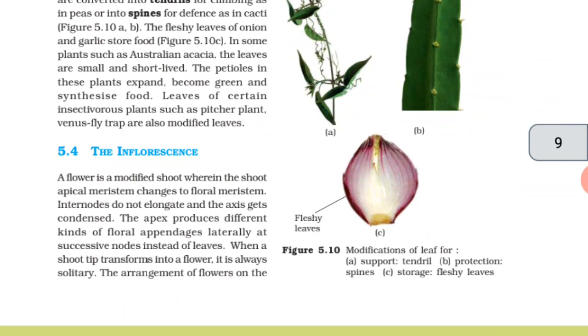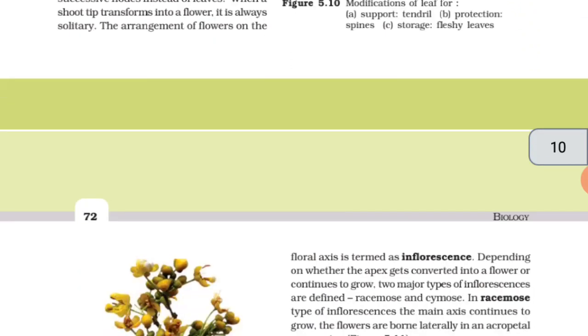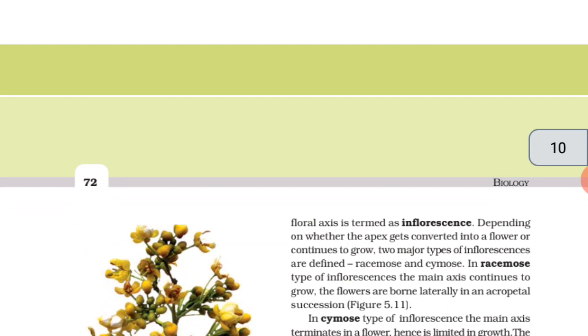The inflorescence. A flower is a modified shoot wherein the shoot apical meristem changes to floral meristem. Internodes do not elongate and the axis gets condensed. The apex produces different kinds of floral appendages laterally at successive nodes instead of leaves. When a shoot tip transforms into a flower, it is always solitary. The arrangement of flowers on the floral axis is termed an inflorescence.